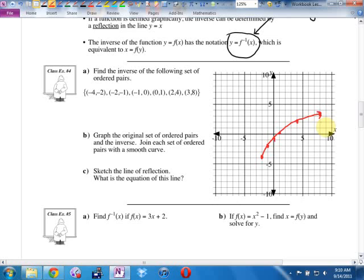I'm going to graph the original points here. The original points are negative four, negative two. Negative two, negative one. Negative one, zero. Zero, one. Two, four. And three, eight. The original graph looks like this. And you can see, I hope, that the inverse is symmetrical with the original. In fact, we say it reflects about a line. There is a line of reflection.